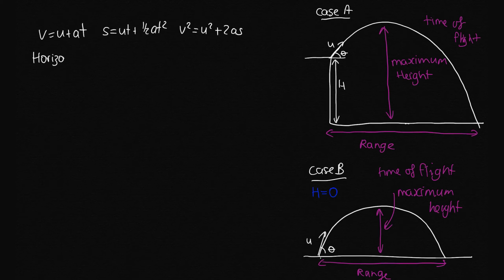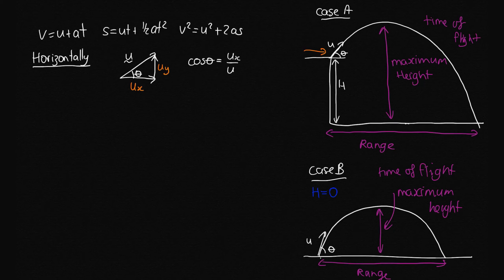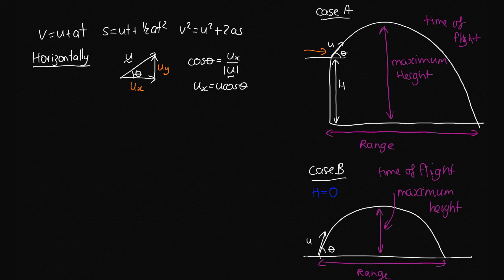Horizontally, the first thing we need is our initial velocity in the horizontal direction. We've got velocity vector U which we can split into components. We have angle theta, giving us Ux and Uy. From trigonometry, cos theta equals adjacent over hypotenuse, so Ux over U. Therefore Ux equals U cos theta — that's the initial velocity in the x direction.